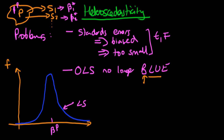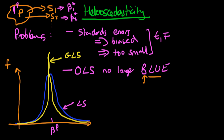The problem when we have heteroscedasticity is that there are other linear unbiased estimators which are better than least squares — by better I mean more efficient, so their sampling distribution is narrower. One such estimator is generalised least squares, of which a subset is weighted least squares. If I use generalised least squares instead of OLS when I have heteroscedasticity, because the sampling distribution is less wide, I will get closer to the true population parameter beta_p more often.